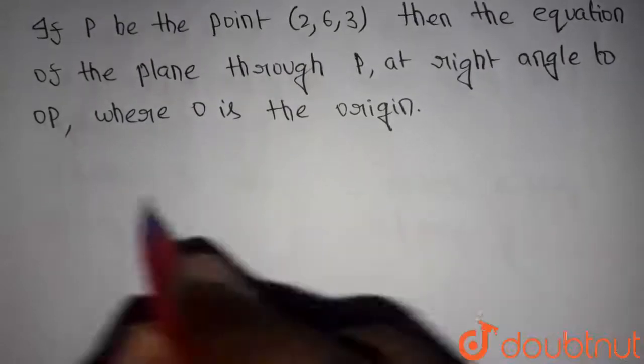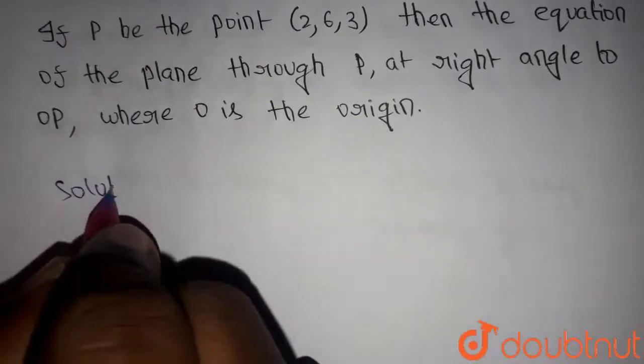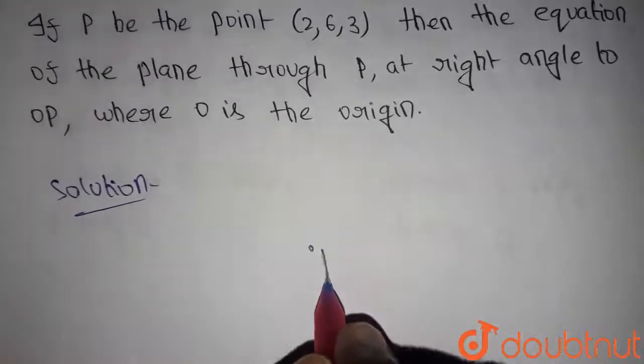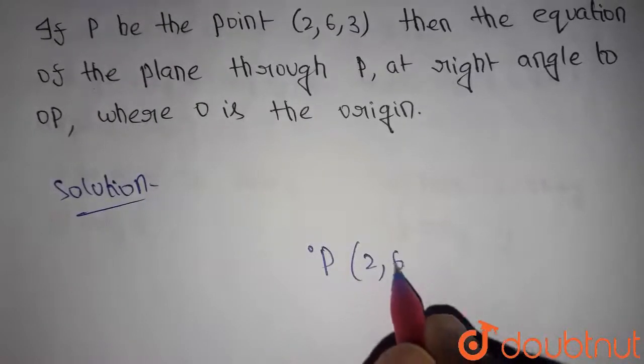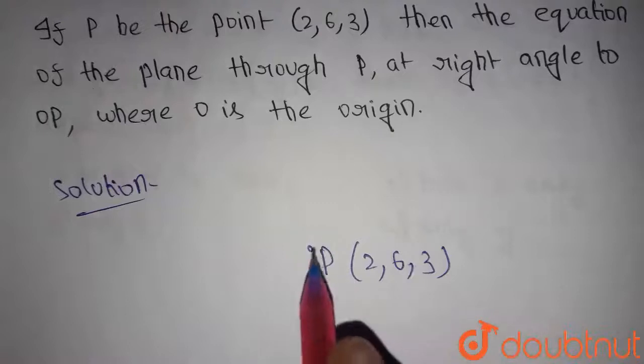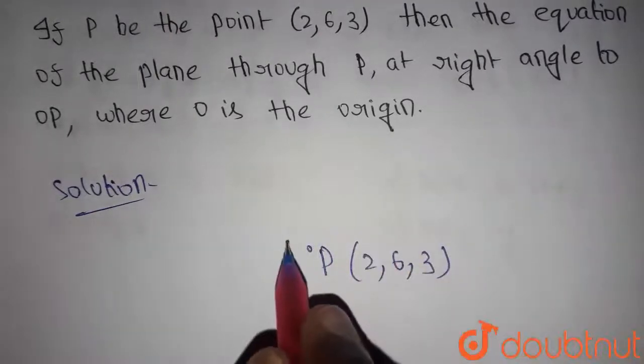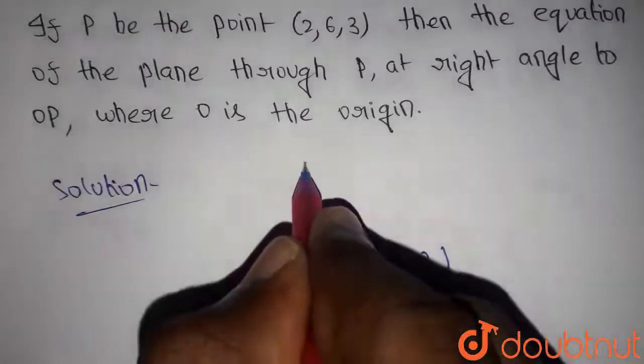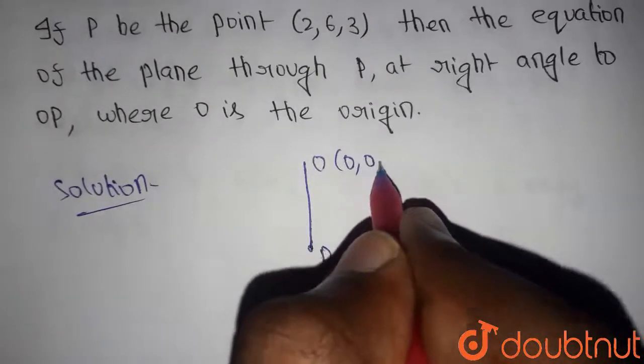Let's get into the solution. Now the point P is given as 2 comma 6 comma 3. Now we have to find a plane which is perpendicular to OP. Let's say this is the OP where O is the origin (0,0,0).